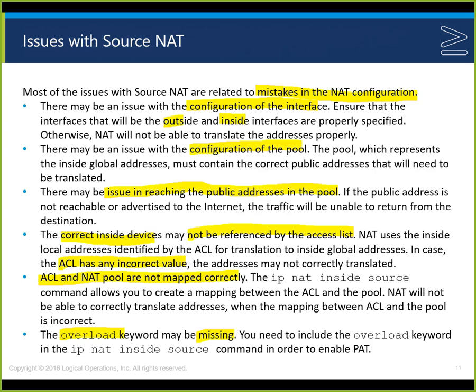If the public address pool is not reachable or advertised to the internet, traffic will be unable to return. We need both a route back to it and permission to get to it — the access control list must include the devices that are allowed to get NATed addresses. If the ACL has incorrect values, addresses may not be properly translated. The ACL and the NAT pool must be mapped correctly. The question mark help screen is very useful: 'ip nat inside source' followed by the ACL name, then either the interface address for PAT or the pool name.